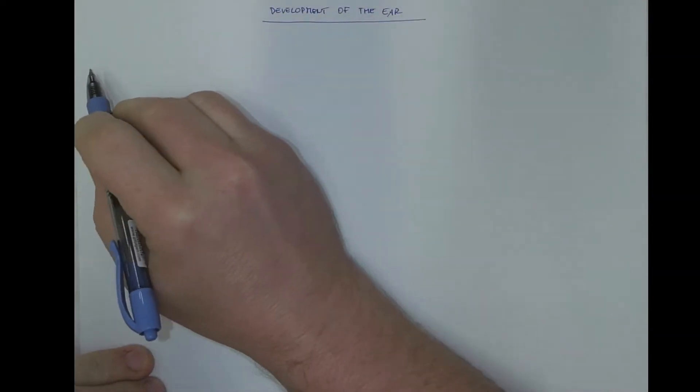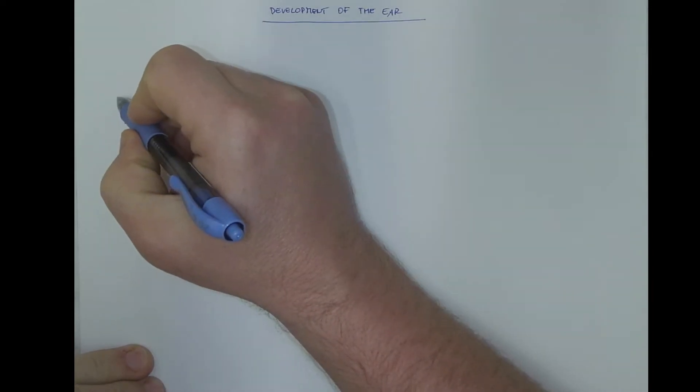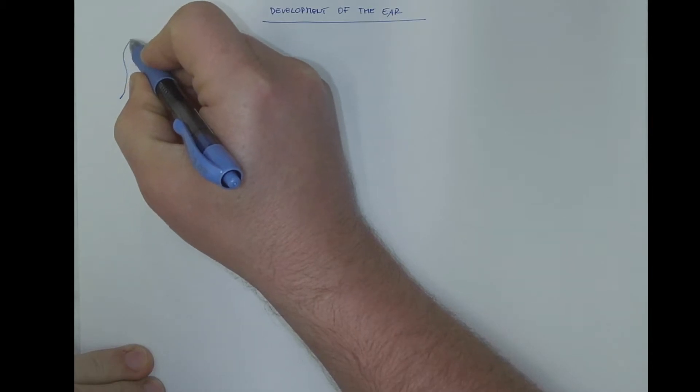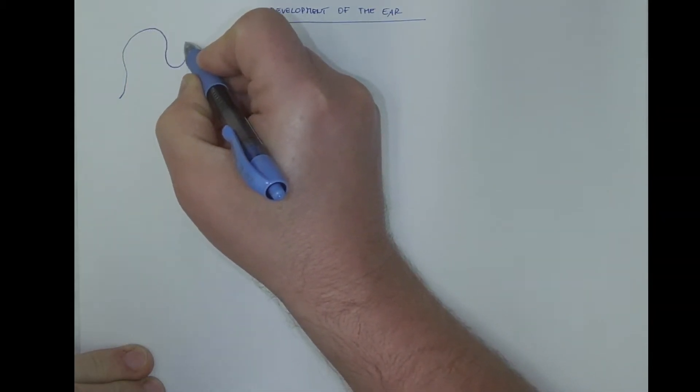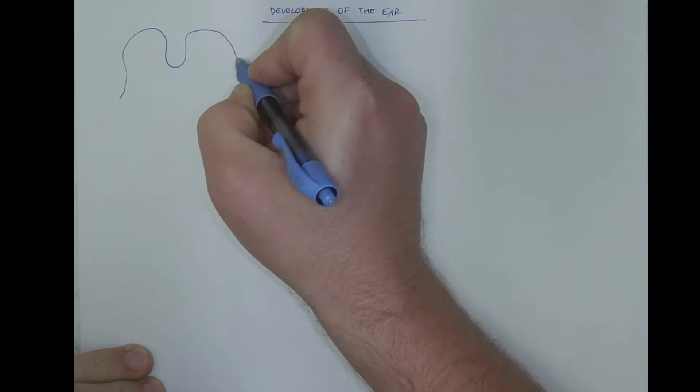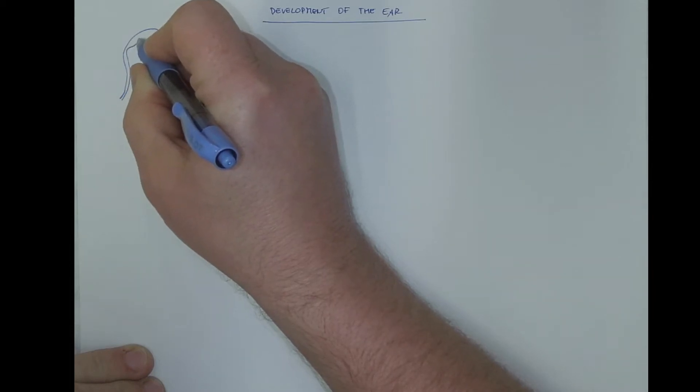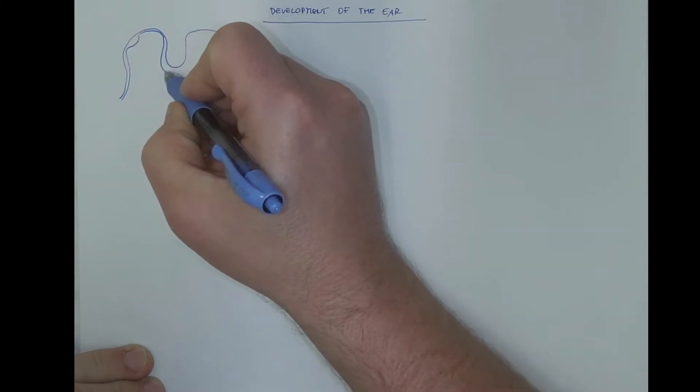If we make a section through the embryonic head in the region of the rhombencephalon that is still invaginating during neurulation, we would notice that on the level of the rhombencephalon there is a thickening of the surface head epithelium.